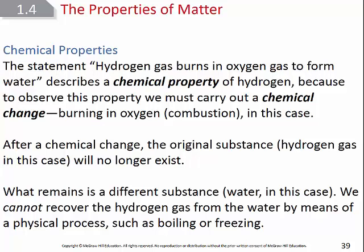A chemical property involves a chemical change — one that changes the identity of the substance. Physical properties do not change the identity. Physical changes are things like changing the state of matter — melting, for example. If solid ice melts into liquid water, it's still H₂O. The identity didn't change. So melting is a physical change, and melting point is a physical property.